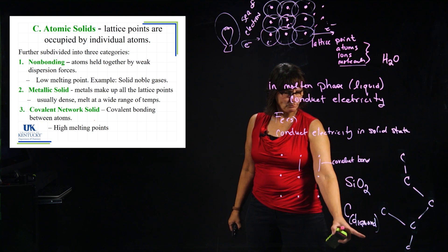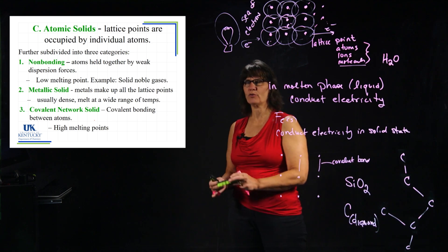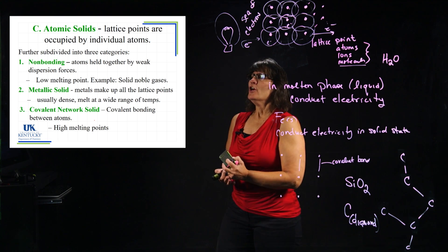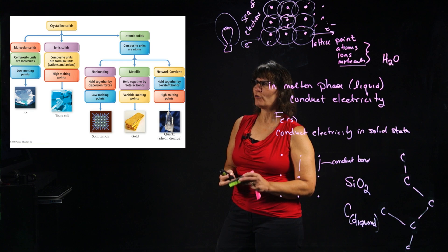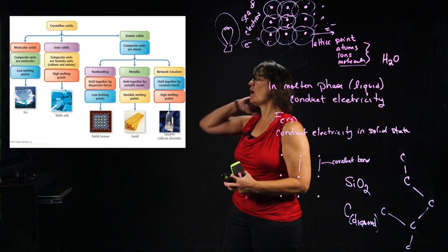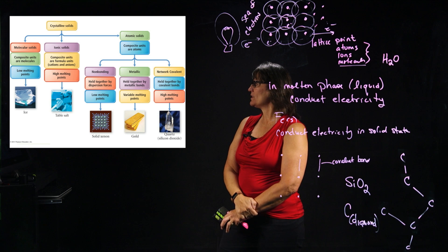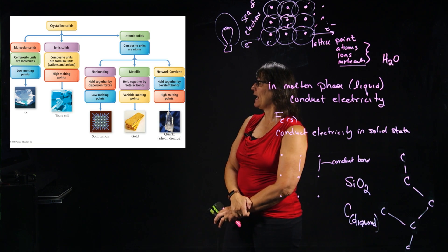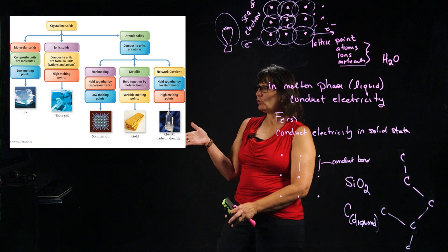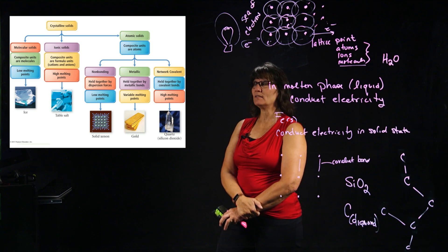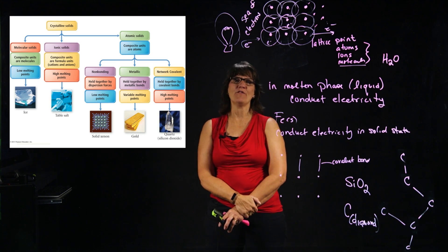Diamond has the highest melting point of all elements, because to melt it you are breaking all of those covalent bonds. To summarize, there's a slide that gives a breakdown of all of this. We see the molecular solid with an example of ice, an ionic solid with table salt or sodium chloride, solid xenon as the non-bonding atomic solid, gold as the metallic solid, and quartz — silicon dioxide — as the covalent network solid. That gives you the key conditions of each one of those solid types.